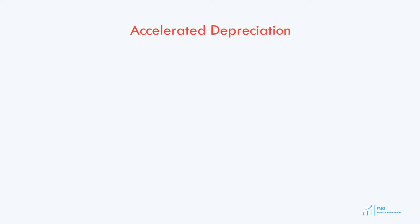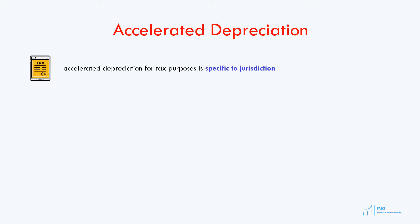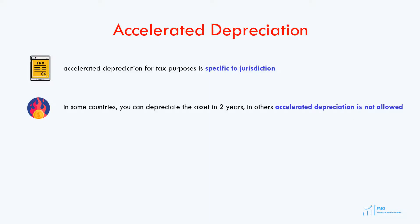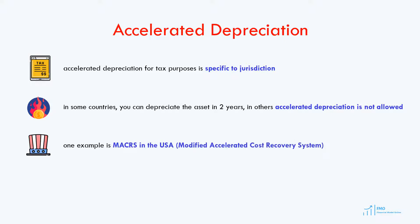Let's now review an example of an accelerated depreciation method. The accelerated depreciation method is country-specific. The tax code in the country where the project is being built will dictate whether accelerated depreciation is allowed and how it should be calculated. In some countries, you can fully depreciate the assets for tax purposes in two years. In other countries, accelerated depreciation is not allowed.